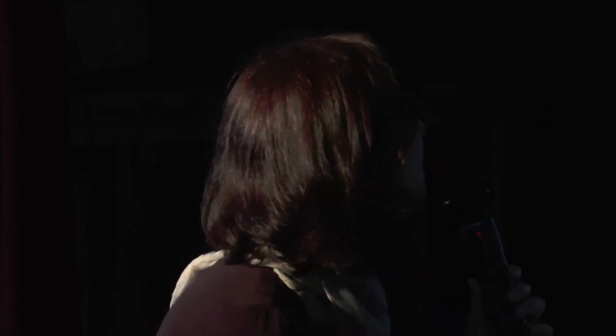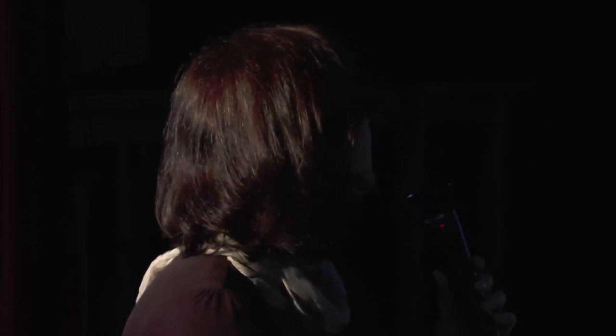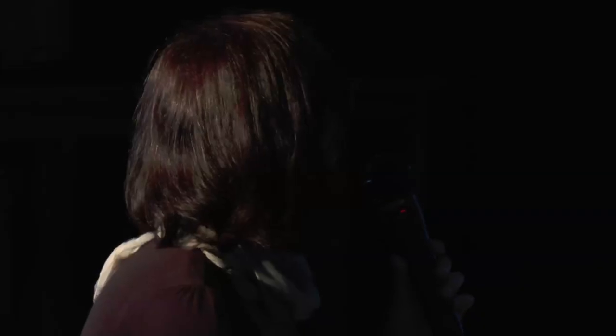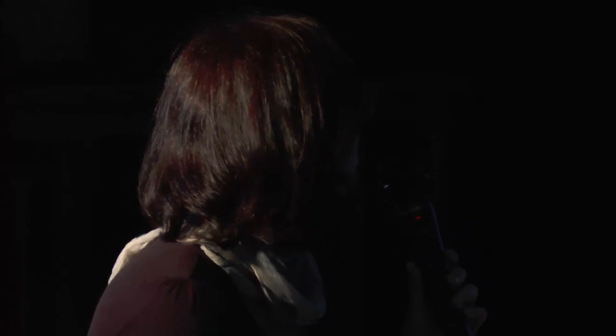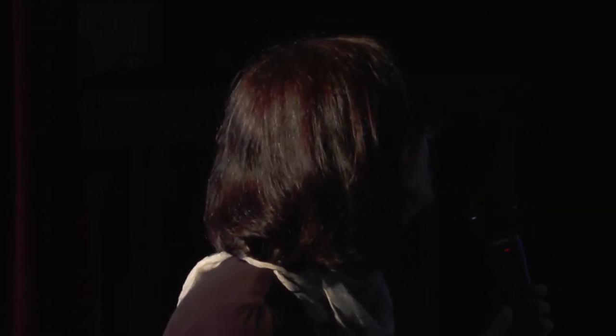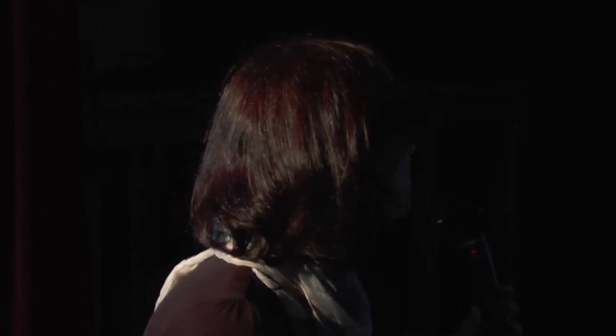Here is what the website for regional products looks like. There are different parts — the top section is the products themselves, the forecast and the analysis, and the lower part corresponds to all the verification products. The individual forecast page lets you select the date going back 15 days, choose which model to plot, choose from four levels — surface, 500 meters, 1000 meters, and 3000 meters — and select the species. You can animate to see how plumes evolve with time in the forecast, and download figures as PDF.